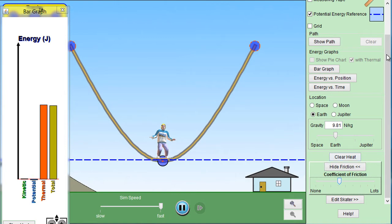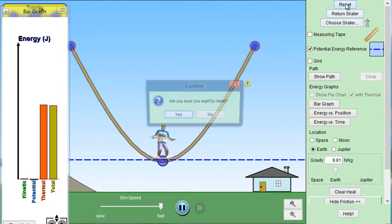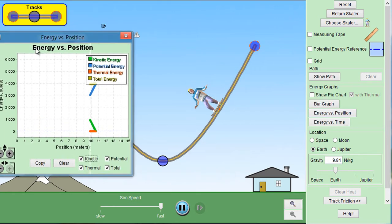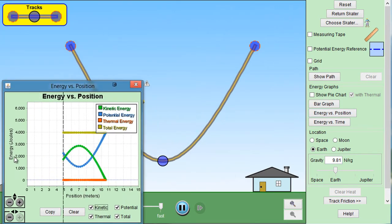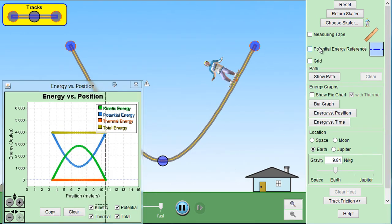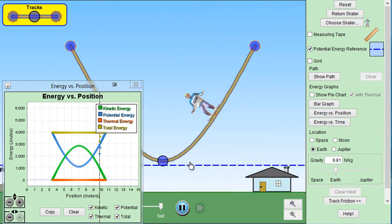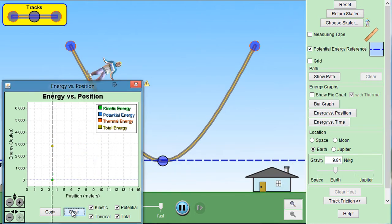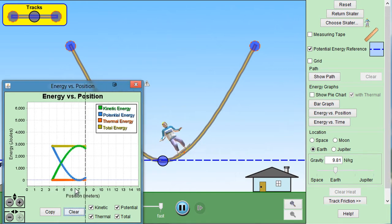Let's take a look at another type of graph. I'm going to hit reset, make everything back to the way it was. Let's click on energy versus position. So this graph shows potential energy in blue, kinetic energy in green. I'm going to again bring potential energy reference up to the bottom of the ramp and I'm going to hit clear and have it restart.